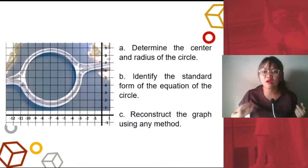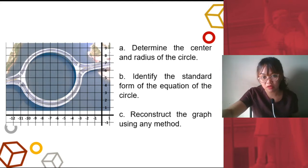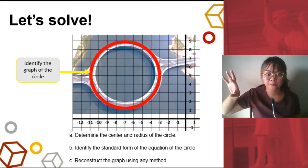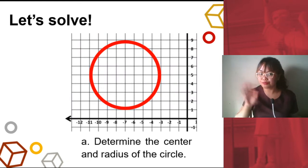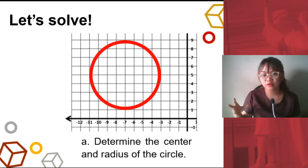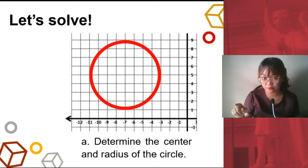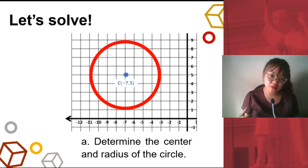So what you have to do is first determine the center and the radius of the circle. Let's begin by identifying the actual graph of the circle. We extract the circle from the plan superimposed in the coordinate plane. From this circle, we look at the x-axis first — it's at negative 7. Then look at the y-axis — it's at 5. So our center is negative 7, 5.